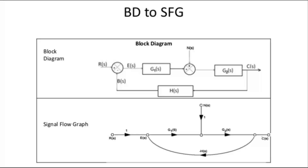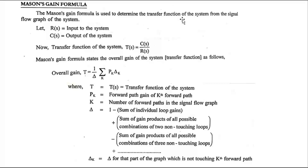A signal flow graph can be reduced either by using the rules of signal flow graph algebra or by using Mason's gain formula. The first method requires writing equations at every node and rearranging them to get the transfer function — this is time consuming and tedious. The second method, Mason's gain formula, is a simpler procedure. It states that the overall gain (transfer function) T(s) = C(s)/R(s) equals (1/Δ) × summation of Pk·Δk.